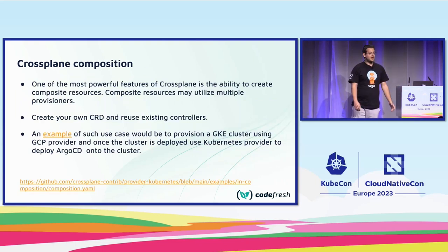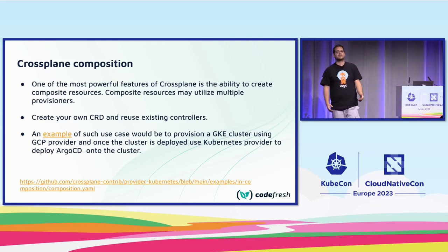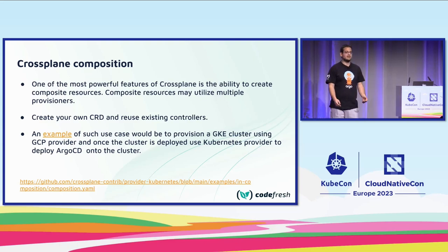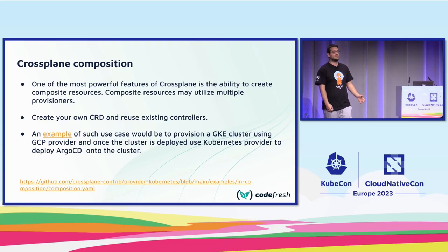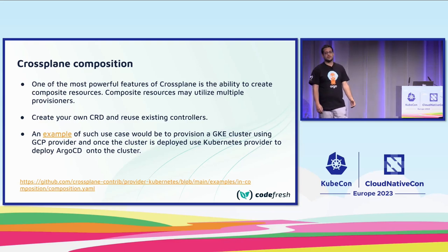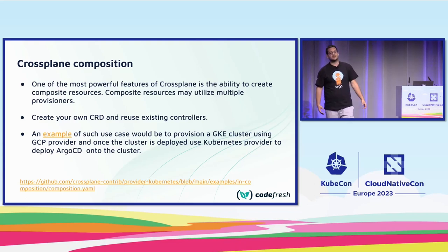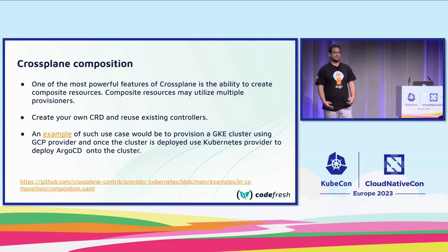One of the most powerful features of Crossplane is the ability to create compositions and composite resources. We can create our own CRD that utilizes multiple providers. For example, if my Kubernetes cluster needs to include Argo CD and I want to provision it on GCloud, I'd use the Google Cloud provider to provision the GKE cluster and the Helm provider to deploy Argo CD onto it. Whoever wants to create one of those would create a resource claim. There is such an example in the Crossplane repo.